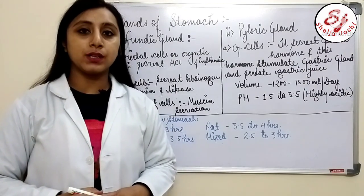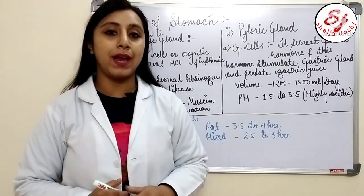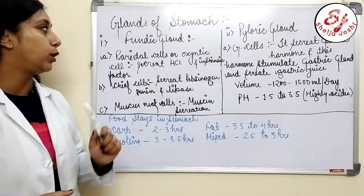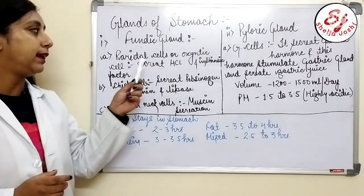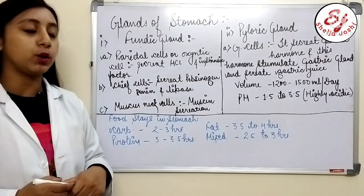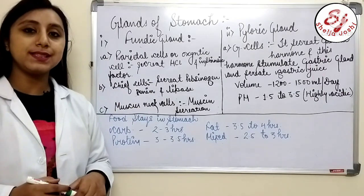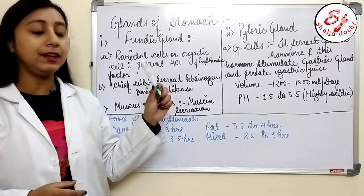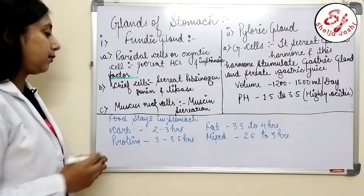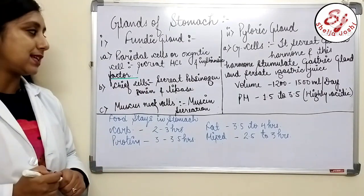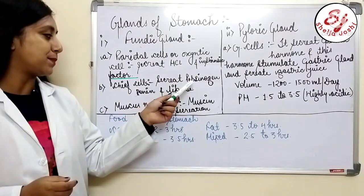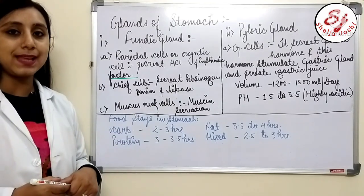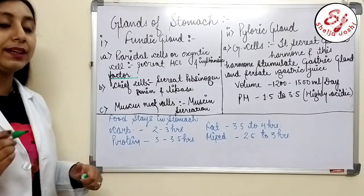Let's talk about the glands of the stomach. There are two glands: fundic and pyloric. The fundic gland is found in the fundus part of the stomach. It contains parietal or oxyntic cells, which secrete HCl and intrinsic factor. Chief cells produce pepsinogen, rennin, and lipase. Mucous neck cells secrete mucin.